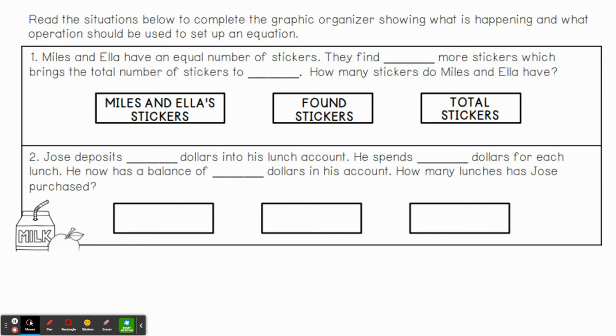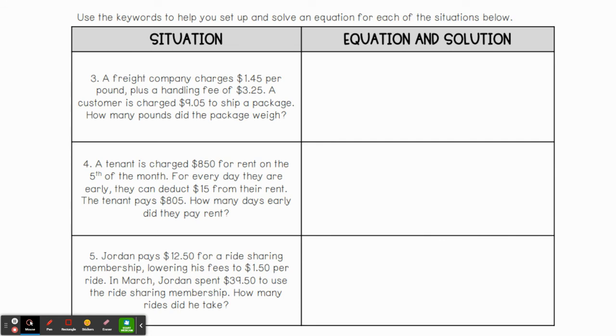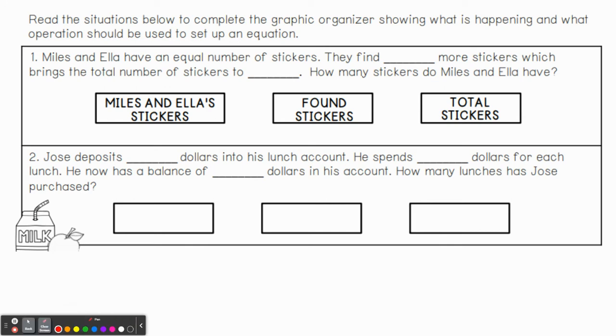So here we want to read the situation and complete the graphic organizer. Miles and Ella have an equal number of stickers. They find blank more stickers, which brings the total number of stickers to blank. How many stickers do Miles and Ella have? So basically we are adding Miles and Ella stickers with the found stickers to equal the total stickers.